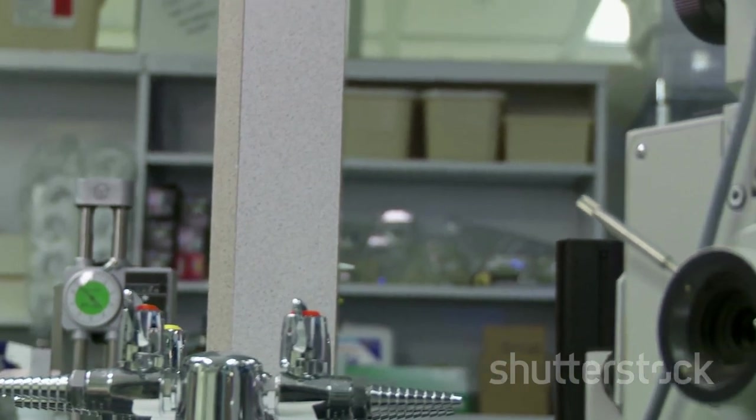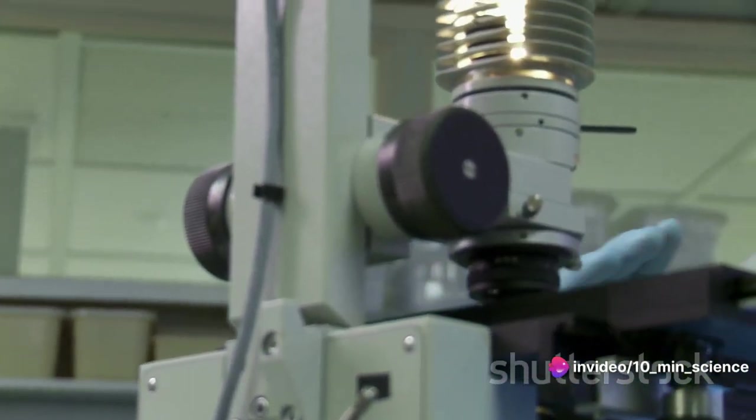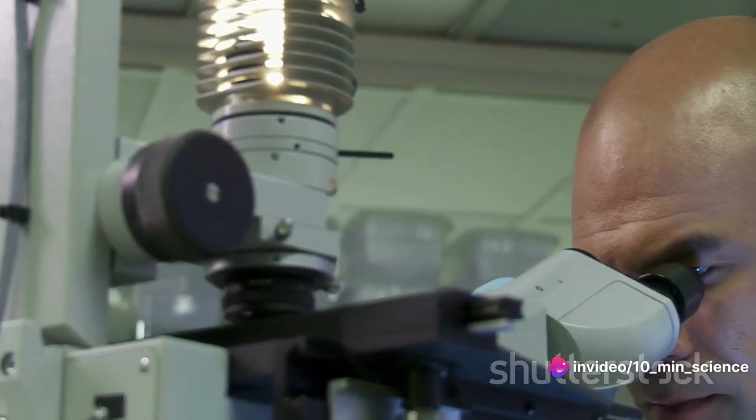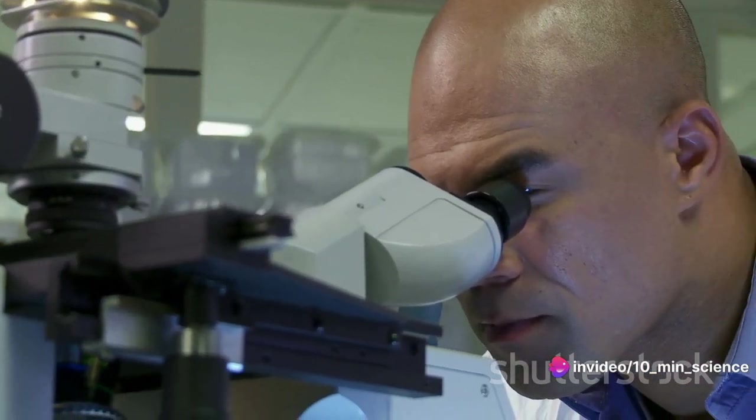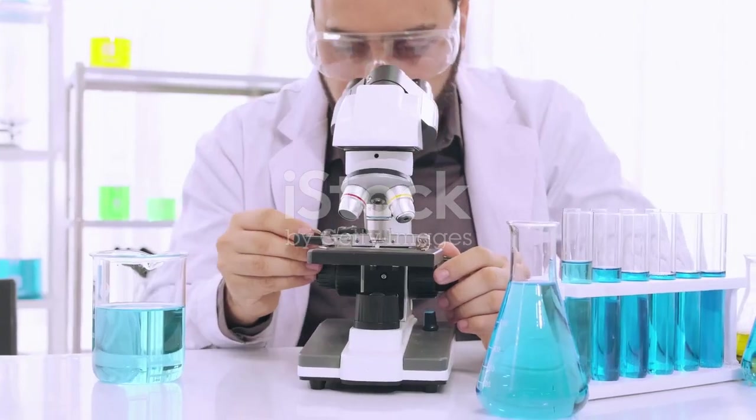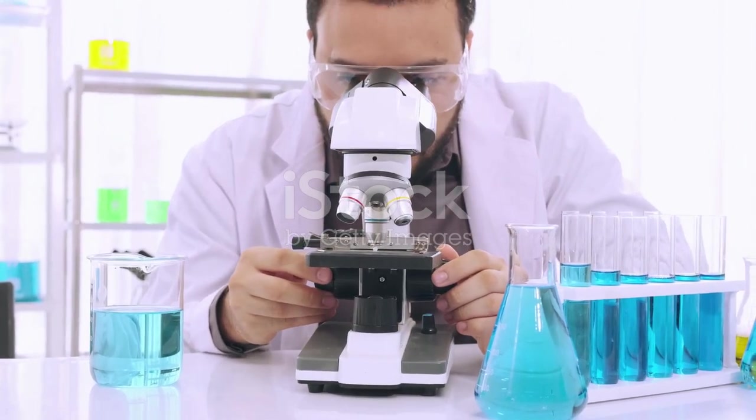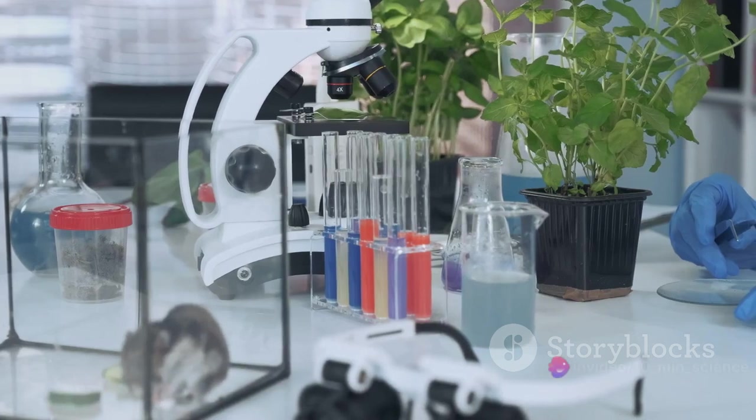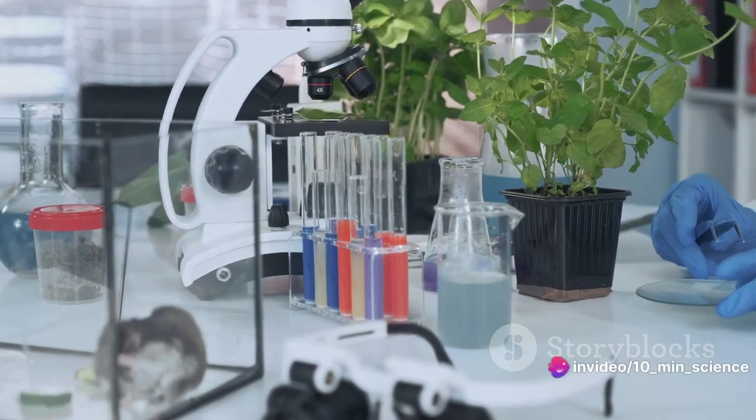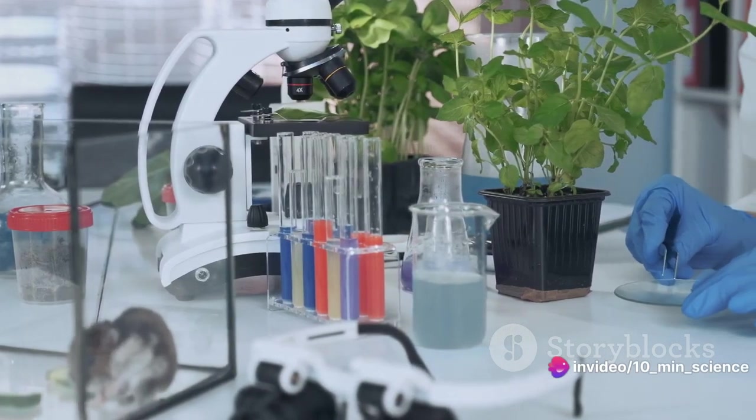Janssen, in his quest to create more powerful lenses for his spectacles, inadvertently stumbled upon a concept that would change the course of scientific research. Janssen's early microscope was a far cry from the precise instruments we have today. It was a simple tube with lenses at both ends, capable of magnifying objects up to 10 times their original size.